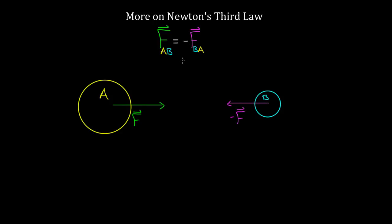These Newton's third law force pairs — often called force pairs or Newton's third law partner forces — are always on different objects. The convention I'm using is that the first letter represents the object the force is on. So this A means the green force F is on A and exerted by B. The pink force is on B and exerted by A. They're equal and opposite, but they do not cancel because they're not on the same object.